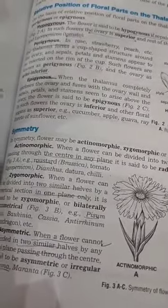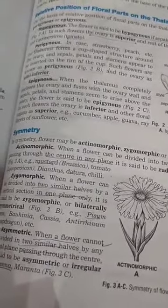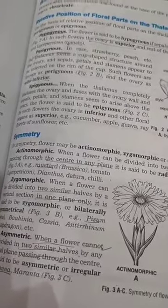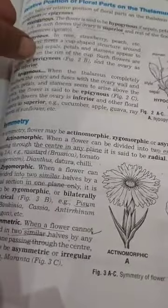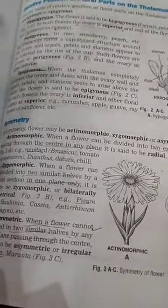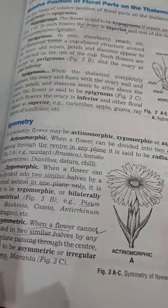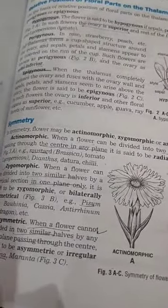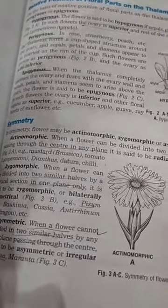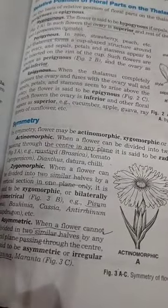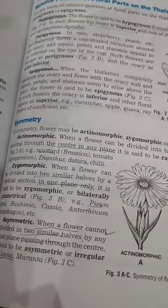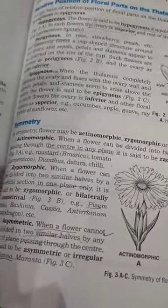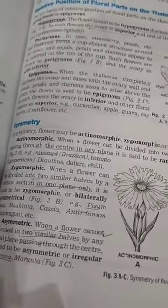In a perigynous flower, the ovary is semi-inferior. In an epigynous flower, the ovary is completely enclosed — the floral parts fuse around and above it, making the ovary completely inferior. An example of an epigynous flower is the cucumber.